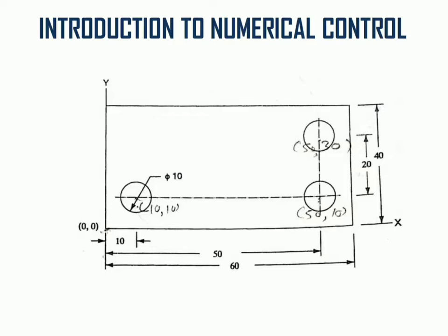As you can see on your screen, there is a point-to-point operation design given. In this particular design, three holes are given. Those three holes have a diameter of 10 mm and need to be machined with the help of a drilling operation. We need to create a manual part program with the help of this design. All dimensions are in mm, and dimensions for each drilling point are also available. We need to first calculate the coordinates of drilling point 1, drilling point 2, and drilling point 3.